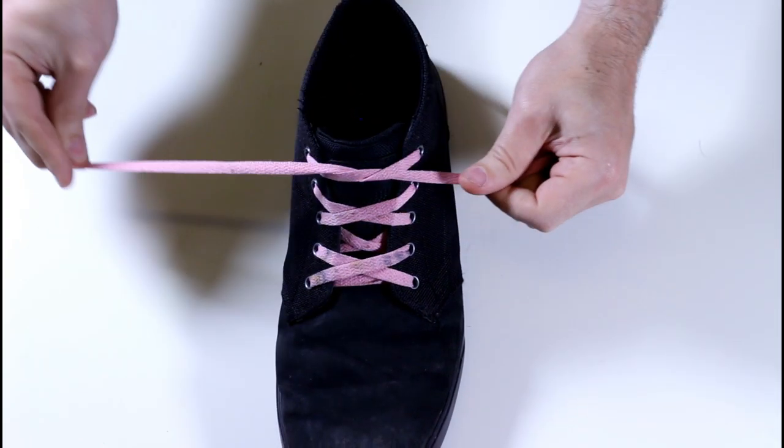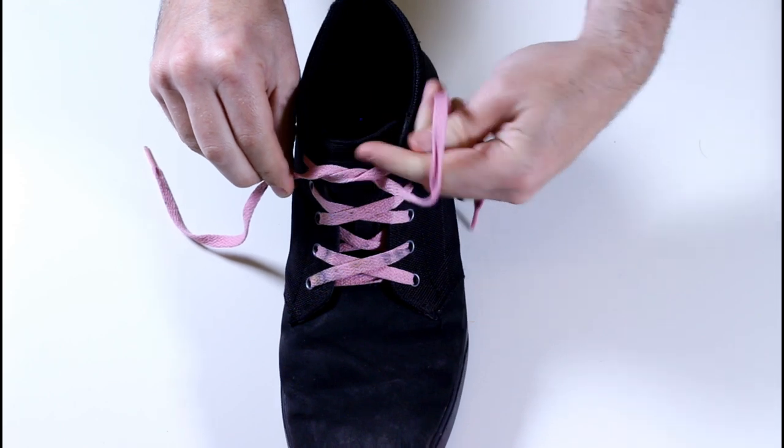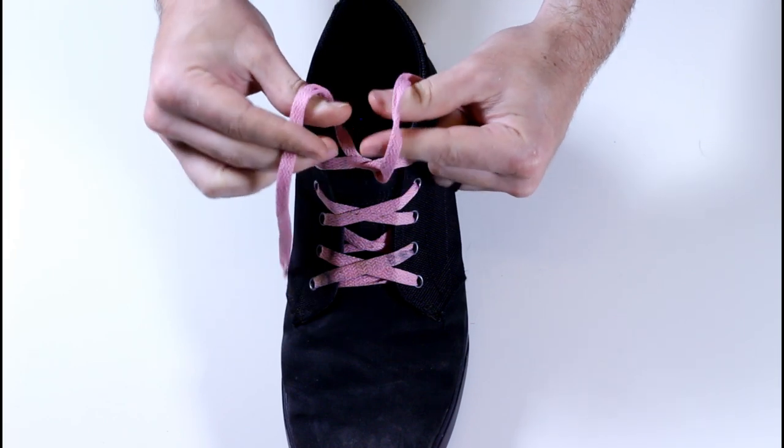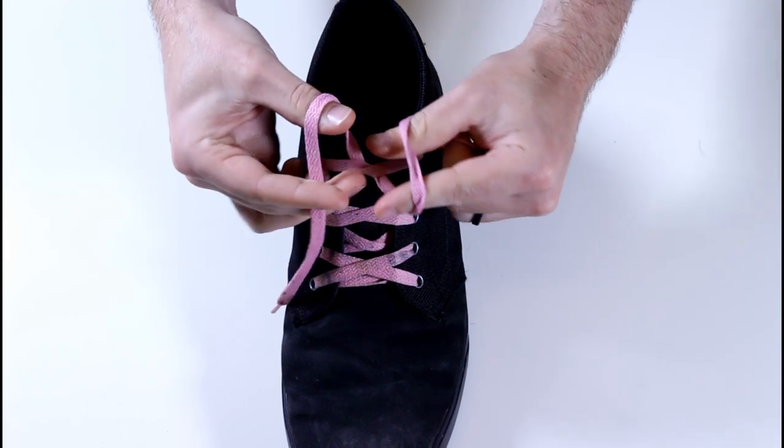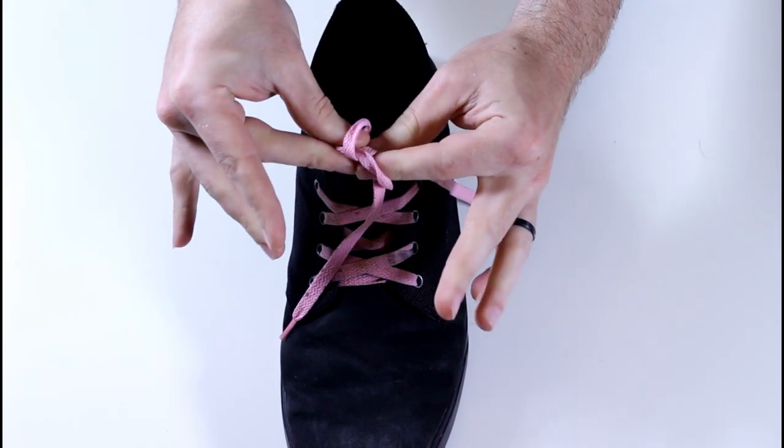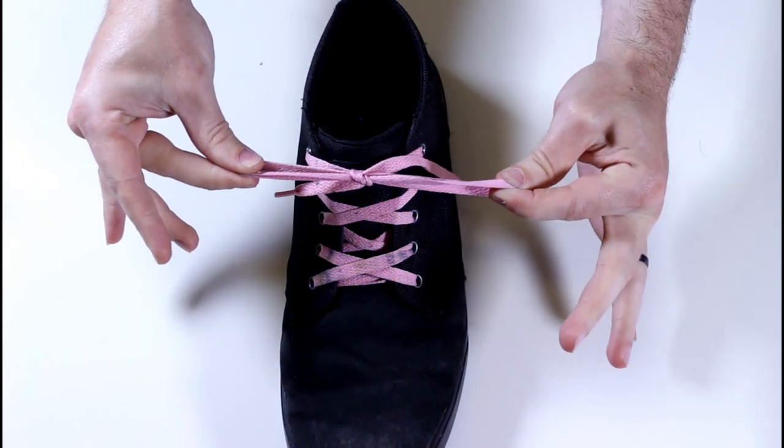Now, lay the ends of your laces over your thumbs and fingers and stretch them out a little. One's getting stretched this way, the other is going to get stretched like this. Now, reach over and grab the opposite stretched out bit and pull both loops through.